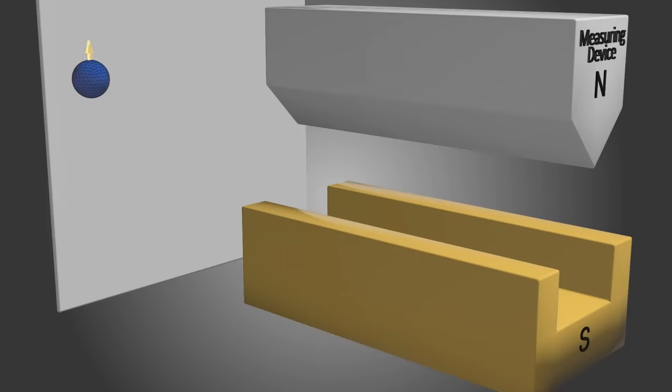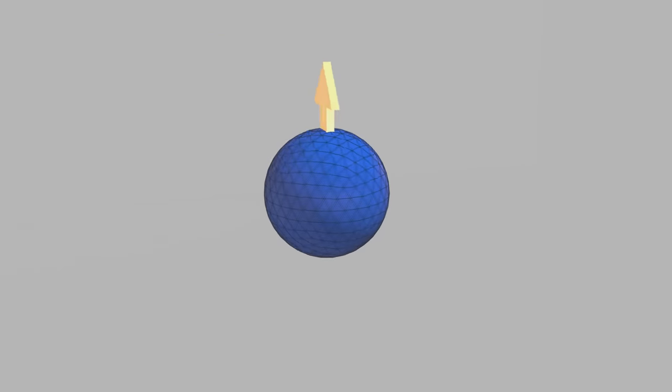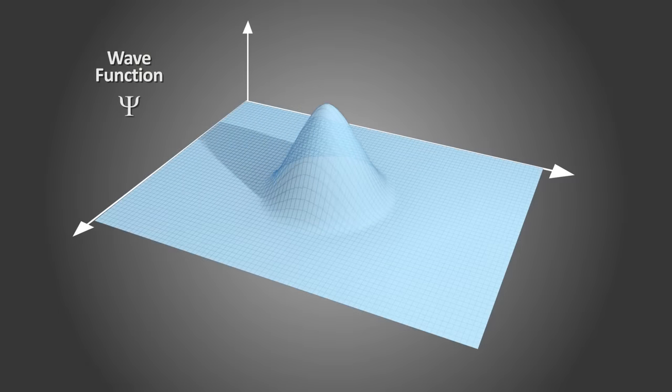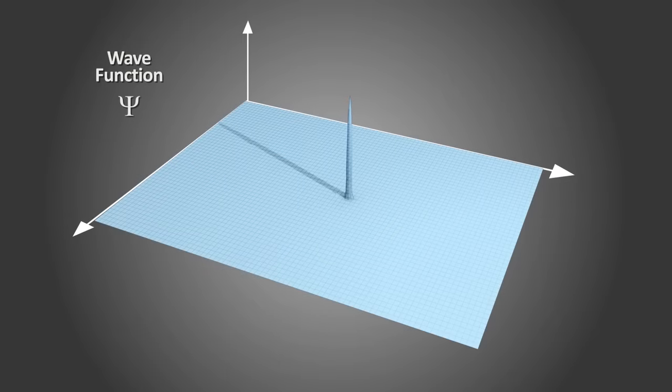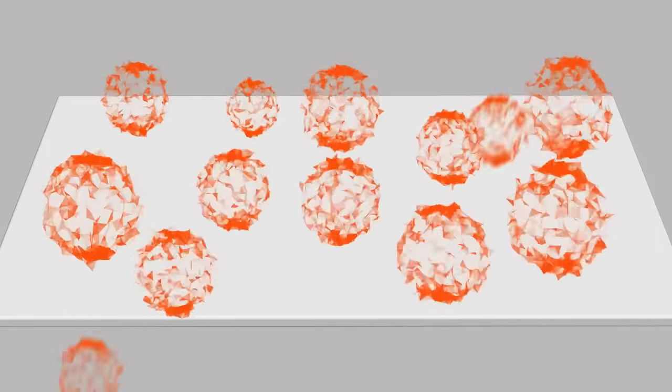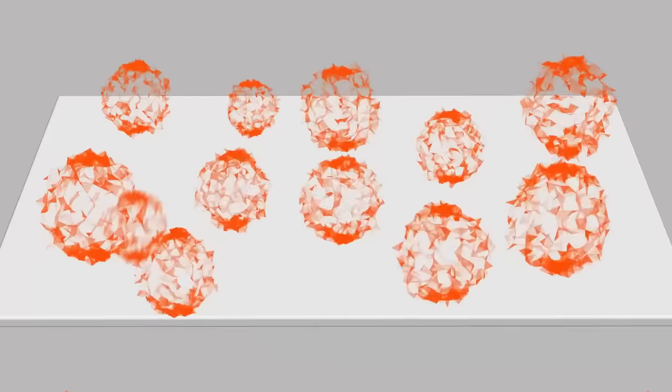There's now a pretty good understanding of how decoherence happens and how it creates a classical outcome, a definite result, from a quantum measurement. So, in place of the old sudden and slightly mysterious idea of wave function collapse, we now have a theory that at least in some simple cases can show us how decoherence produces classical from quantum. It's a real physical process and takes time, though usually a very short time.